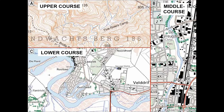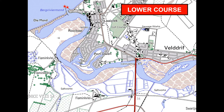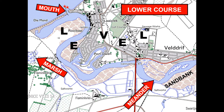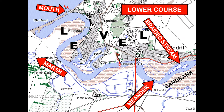In map work, you can also be asked to identify the various courses of a river. In this example we can see the lower course — easy to see the level land with barely any contours in this extract. We have the river mouth, a sandbank, our meander, a marsh, a braided stream, and a broad flat plain.